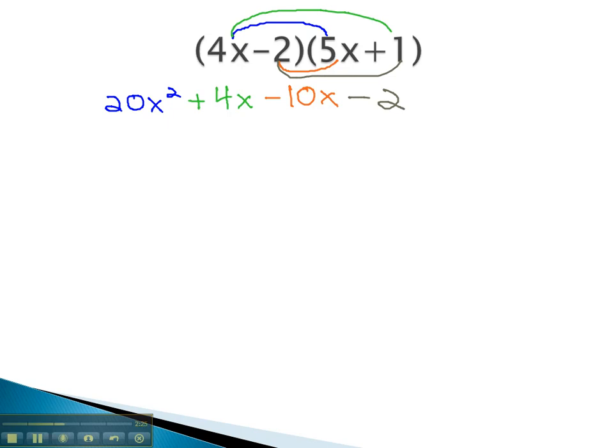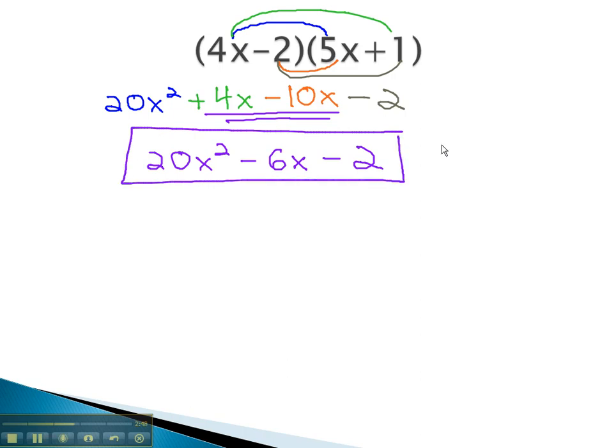Notice, after doing all of this multiplying, there are some like terms that can be combined. Quite often, after using this FOIL method, you will find like terms that you should combine to get our final simplified answer: 20x squared minus 6x, 4 minus 10, minus 2. And this becomes our product when we multiply the binomial times the binomial.